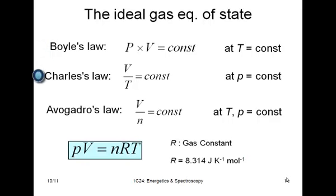Charles's law: volume over temperature is a constant at constant pressure. And Avogadro's law is that volume divided by the number of moles is equal to a constant.